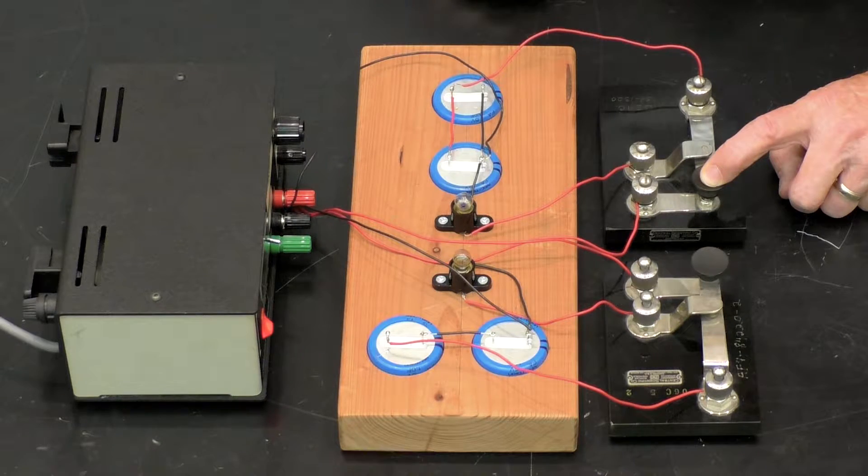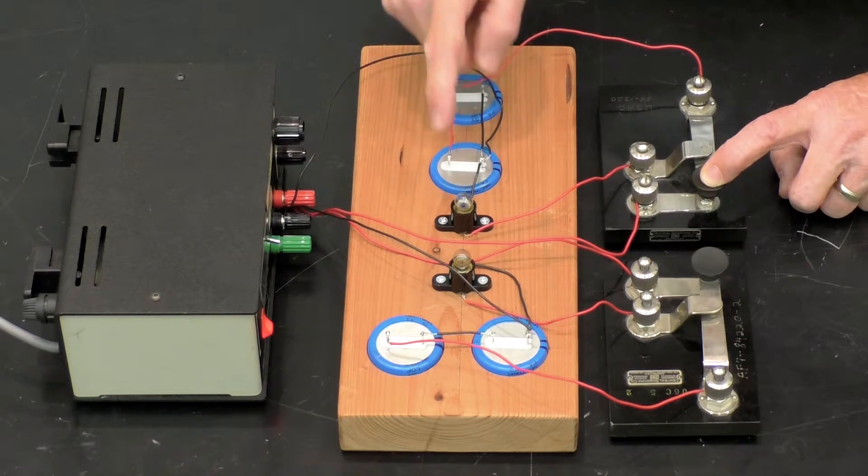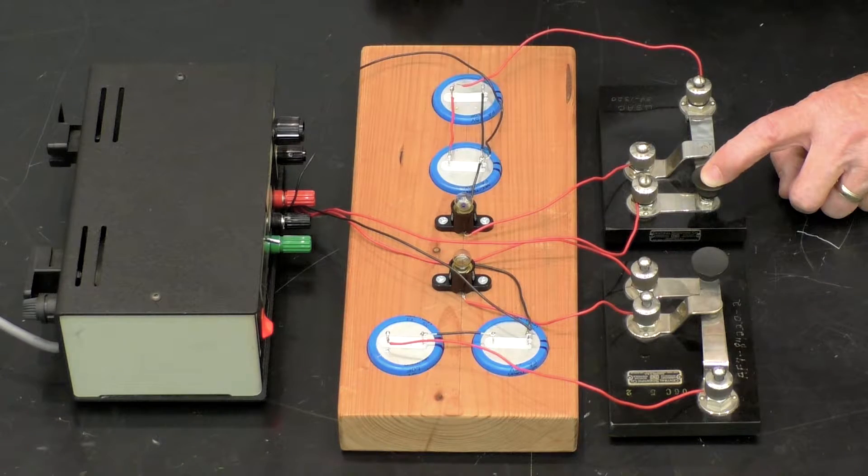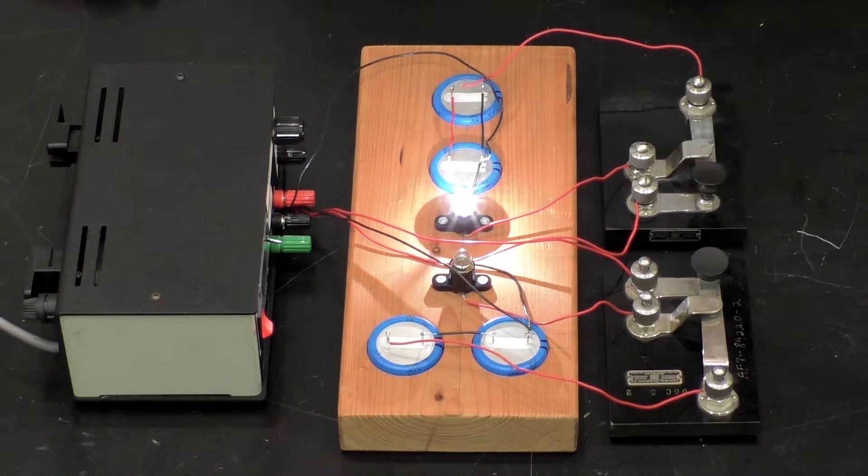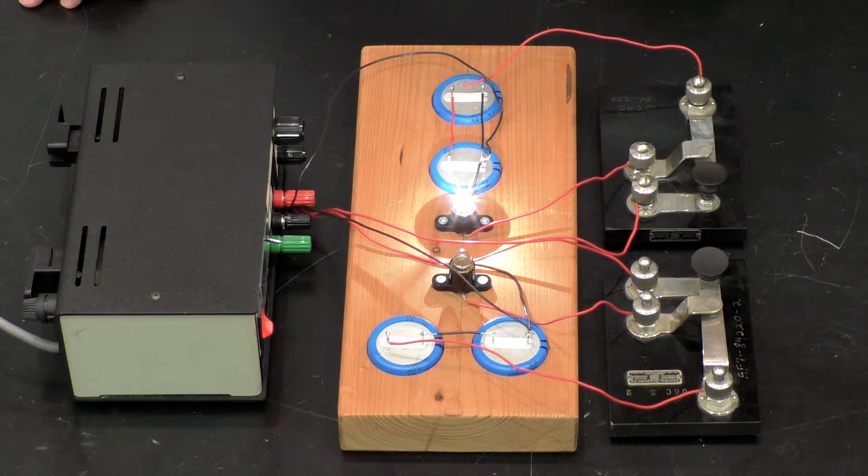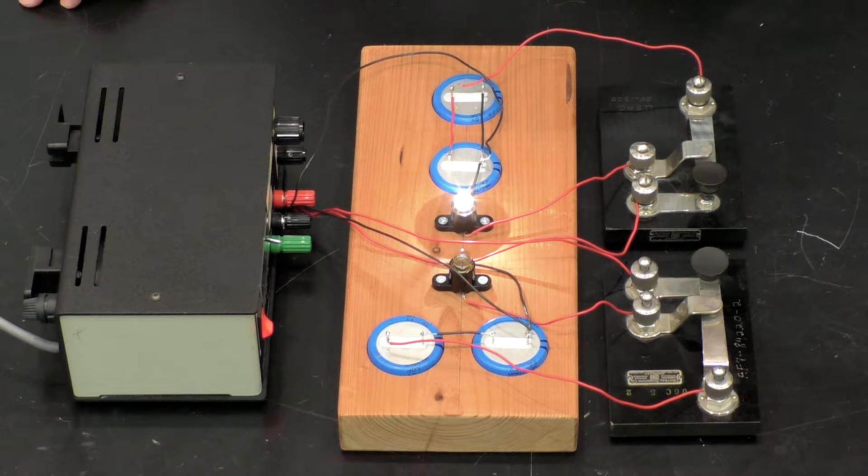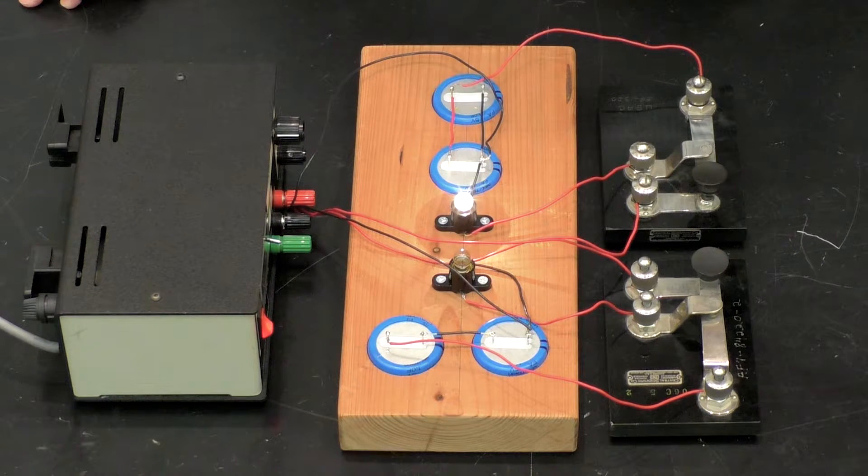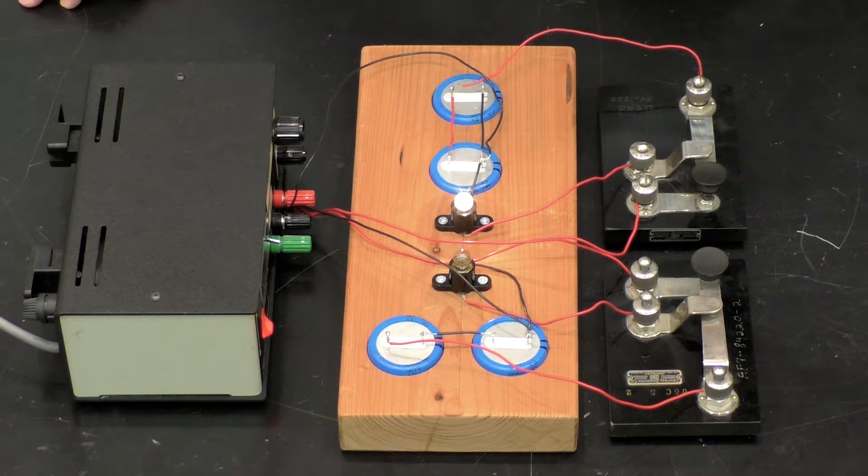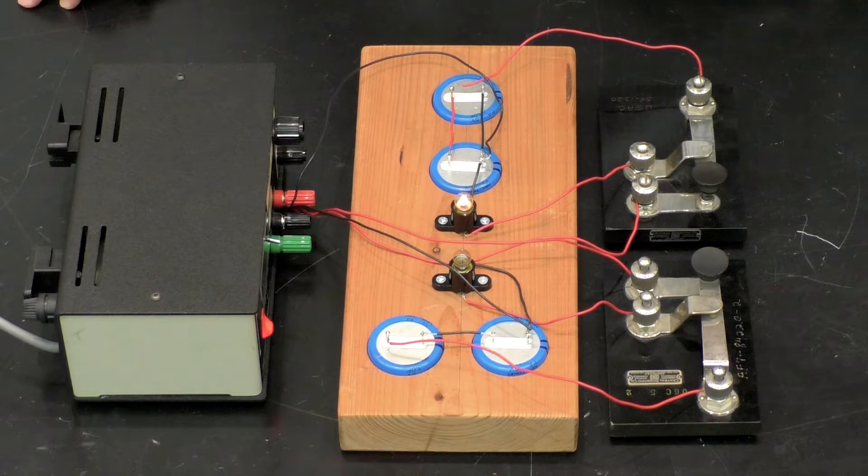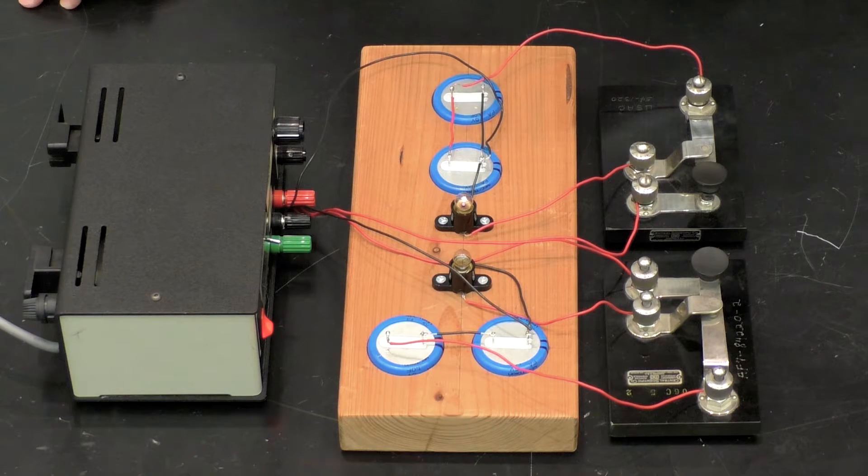Then releasing it, we'll count how long it takes. And notice how bright the bulb is compared to the other bulb. Discharging: 0, 1, 2, 3, 4, 5, 6, 7, 8, 9, 10, 11, 12, 13, 14, 15, 16, 17, 18, 19, 20, 22, 23.